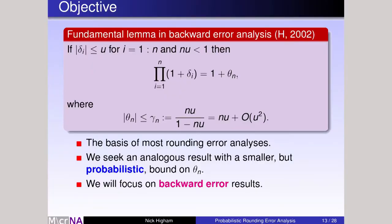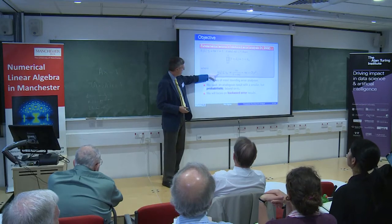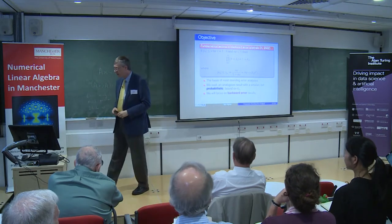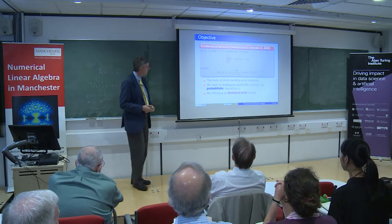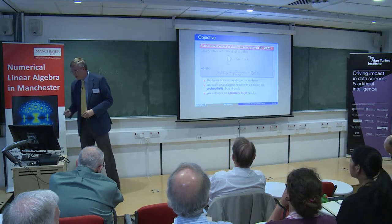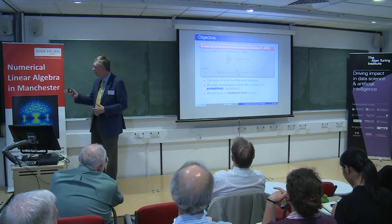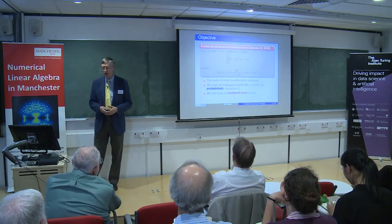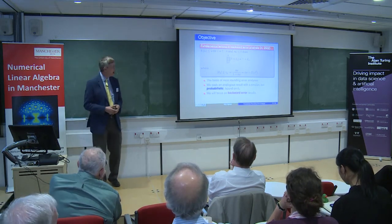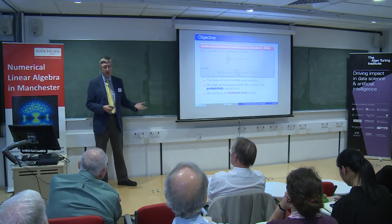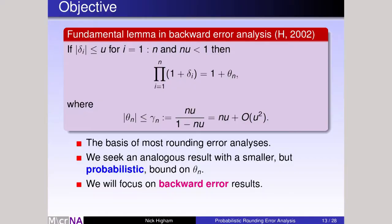The way I'm going to do it is by looking at this lemma. This is the lemma I use in my book on which almost the whole book is based. It's just a lemma on having a product of 1 plus deltas. These deltas are from the rounding error model. The lemma says that how close is this product to 1? It's within a factor theta, bounded by what I call gamma n, which is n u over 1 minus n u. Basically, the theta is bounded by n u plus higher order terms. From that lemma, you can then go on to derive error bounds for inner products, matrix vector, matrix matrix, LU factorization, and so on. If we can have a probabilistic version of this, we can then build on that probabilistic versions of many other results. I'm going to focus on backward error results in this talk. What I want to do is derive a probabilistic version of that result, where hopefully I can get something smaller than an n in the bound.